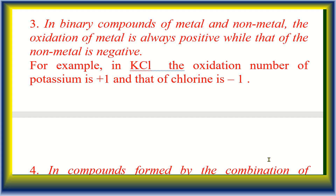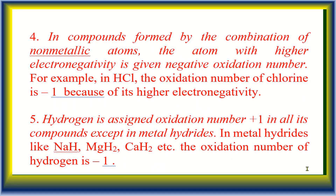Rule 3: In a binary compound of a metal and non-metal, the oxidation number of the metal is always positive while that of the non-metal is negative. Rule 4: In a compound formed by the combination of non-metallic atoms, the atom with higher electronegativity is assigned a negative oxidation number.